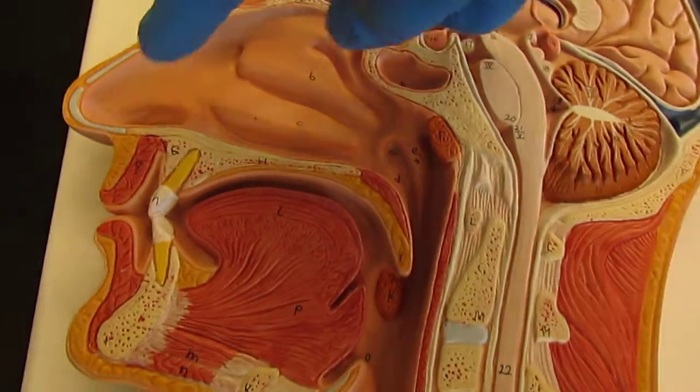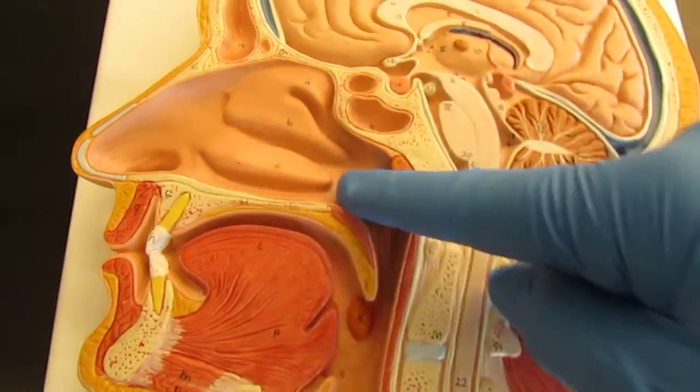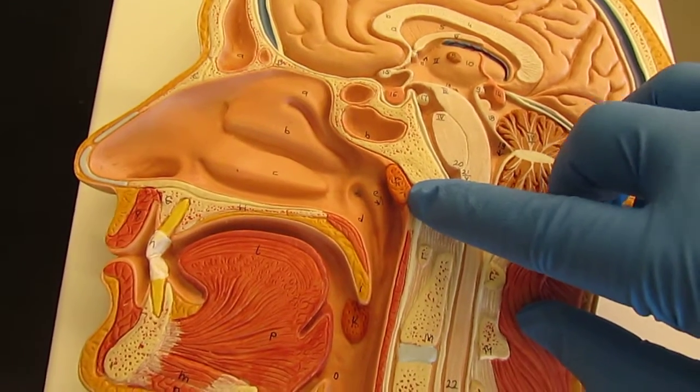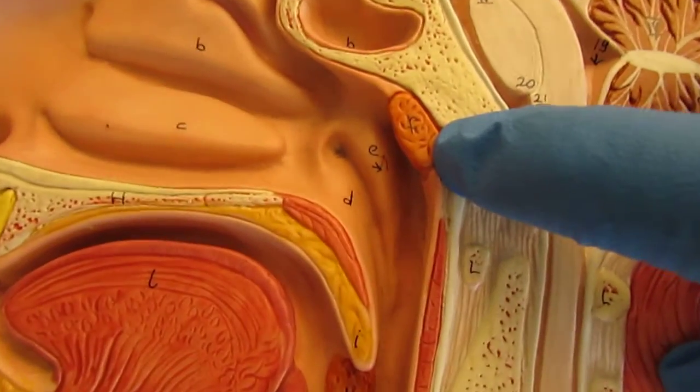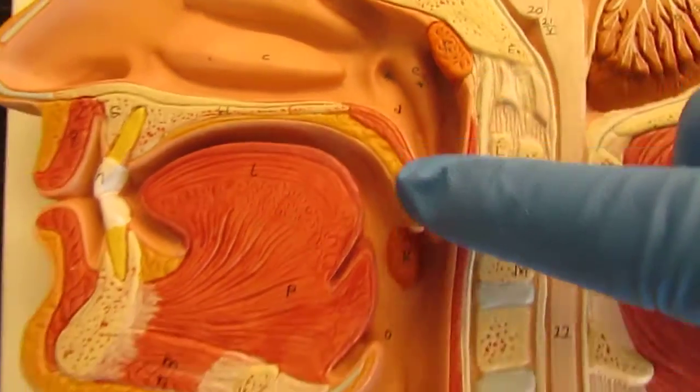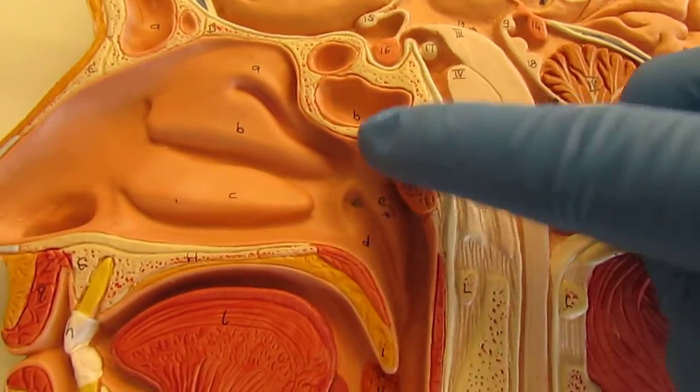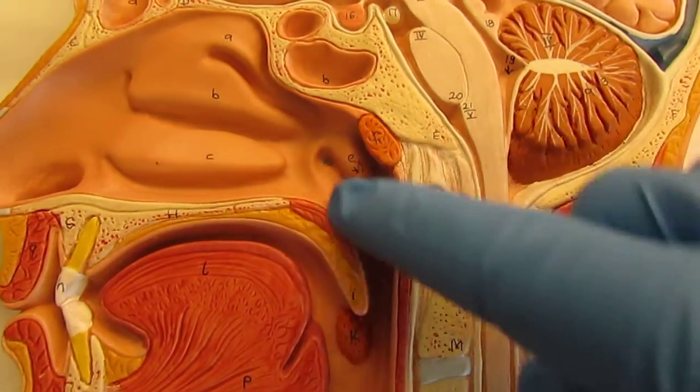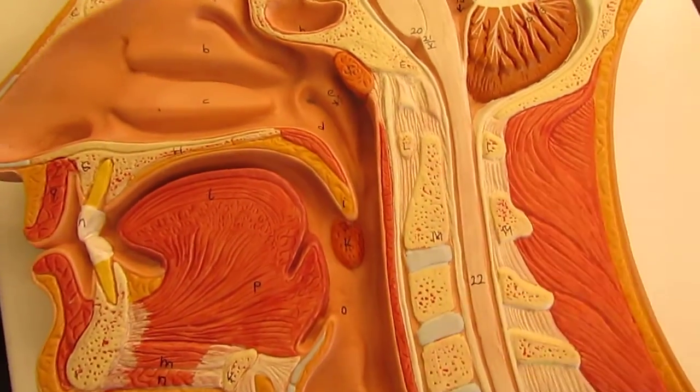So first of all, when you inhale air through your nose, the air is going to pass by this tonsil right here. This is called the pharyngeal tonsil because it's at the beginning of the pharynx. And so this is going to make sure that nothing foreign is actually able to get down into your lungs. At least that's the goal.